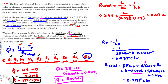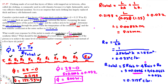Rearranging and solving: L = 0.1878 × 0.035 × 1.25 = 0.00822 m = 8.22 mm. So the wool coat must be 8.22 mm thick to achieve the same thermal resistance as the five-layer ski jacket.